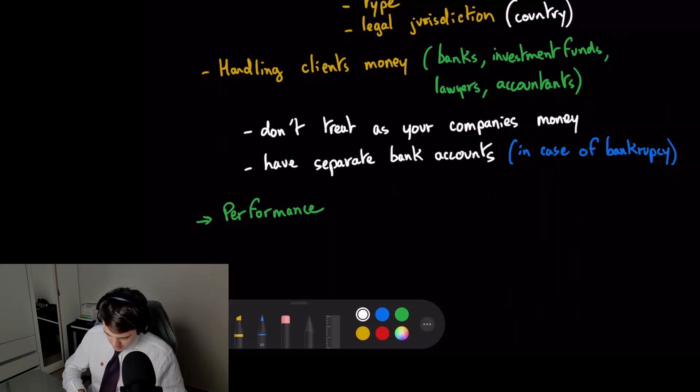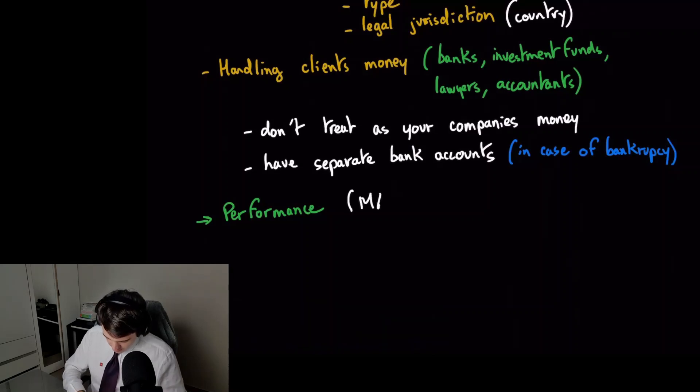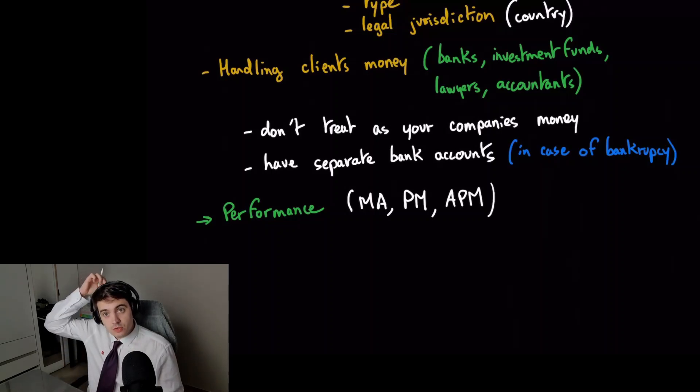The second exam after BT is called MA, management accounting. Also PM, this is exam number five ACCA. It's the same subject, same topic, but a little bit harder than MA. And then the last exam, this is an optional paper you can choose whether you do this one or not, is APM, advanced performance management.